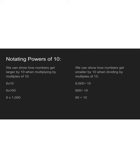We can show how numbers get larger by 10 when we multiply by multiples of 10. For example, 60 times 10 is 600. 6 times 100 — take 6 times 1 and put on two zeros — is 600. 6 times 1,000 is 6,000. We can also show how numbers get smaller when dividing by multiples of 10: match up the zeros and cancel them. One zero each gives 600, then 60, then 6. That's showing how the place value moves backwards.